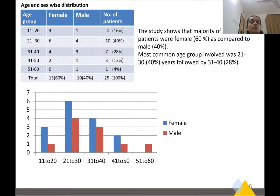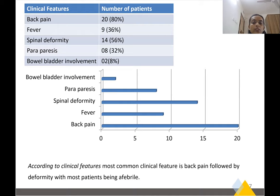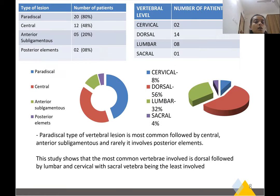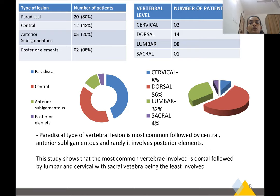The study showed that the majority of patients were female as compared to male. The most common age group was 21 to 30 years, followed by 31 to 40. The most common clinical feature was back pain, followed by deformity, with most patients being afebrile at the time of presentation. The paradiscal type of vertebral lesion was the most common, followed by central, anterior subligamentous, and rarely posterior element involvement. The most common vertebrae involved was dorsal, followed by lumbar and cervical, with sacral vertebrae being the least involved.